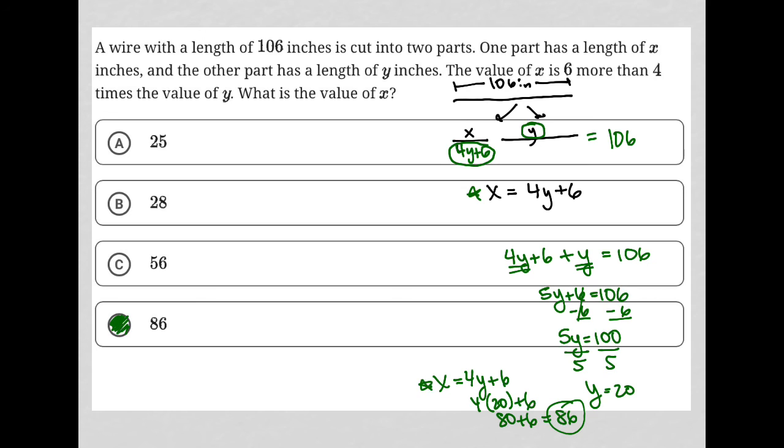We could have also, instead of doing this, just said if the whole thing is 106 and we know that one piece is 20, 106 minus 20 is 86. That's another way to get to our answer as well.